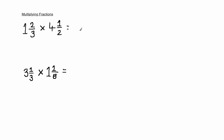In order to multiply these numbers together, the first thing we have to do is convert each fraction into a top-heavy fraction, in other words an improper fraction. The way to do this is to multiply the whole number at the front by the denominator, which is 3, and then add the numerator, which gives you 5. So this is 5 over 3.